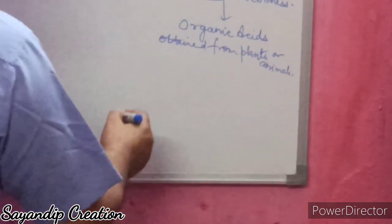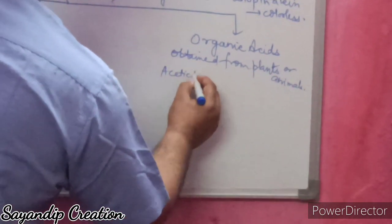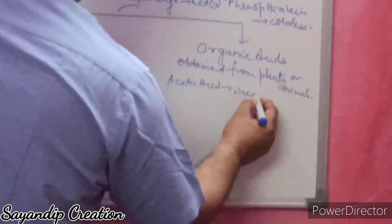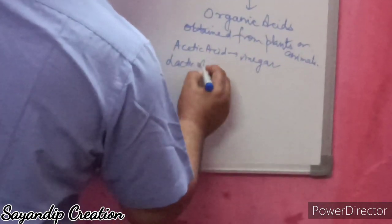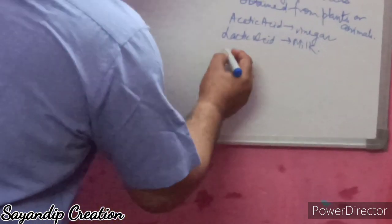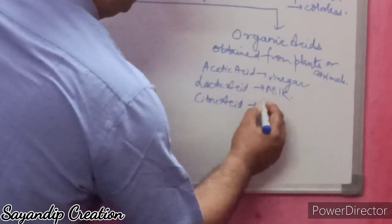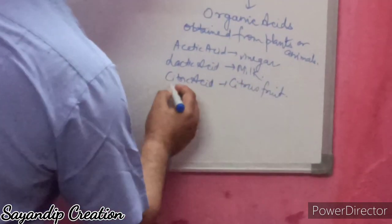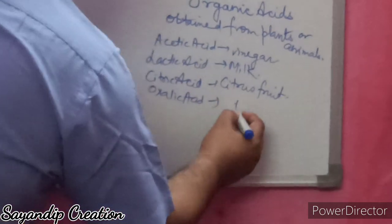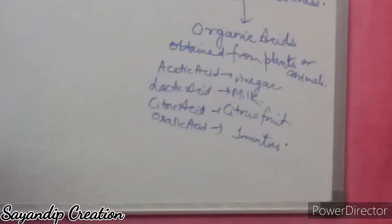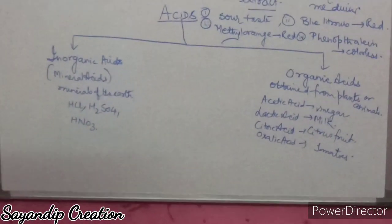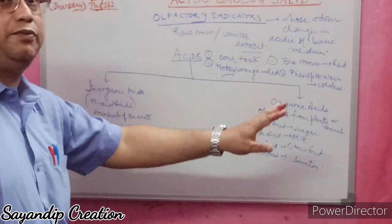Examples of organic acids include: acetic acid, found in vinegar; lactic acid, found in milk; citric acid, found in citrus fruits; oxalic acid, found in tomatoes; tartaric acid, found in tamarind; and malic acid, found in apples.